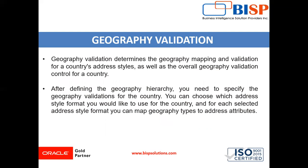Validation determines the geography mapping and validation for a country's address style as well as the overall geography validation control for a country. After defining the geography hierarchy, you need to specify the geography validation for a country. You can choose which address style you would like to use for a country, and for each selected address style format, you can map geography type to address attribute.